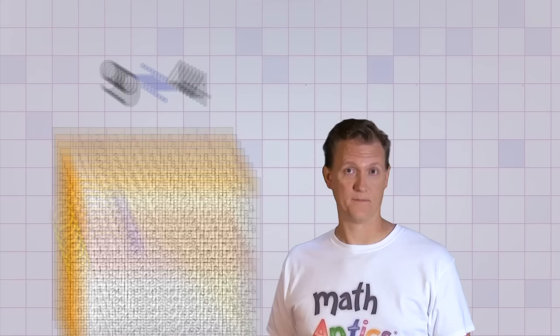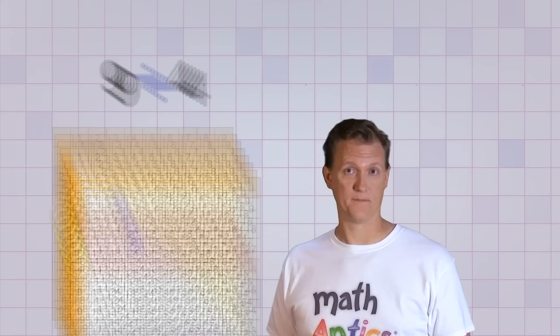That's because 9 is not a multiple of 4. There's no whole number that you can multiply 4 by and end up with 9. That means that 9 can't be divided equally into 4 groups without having something left over.